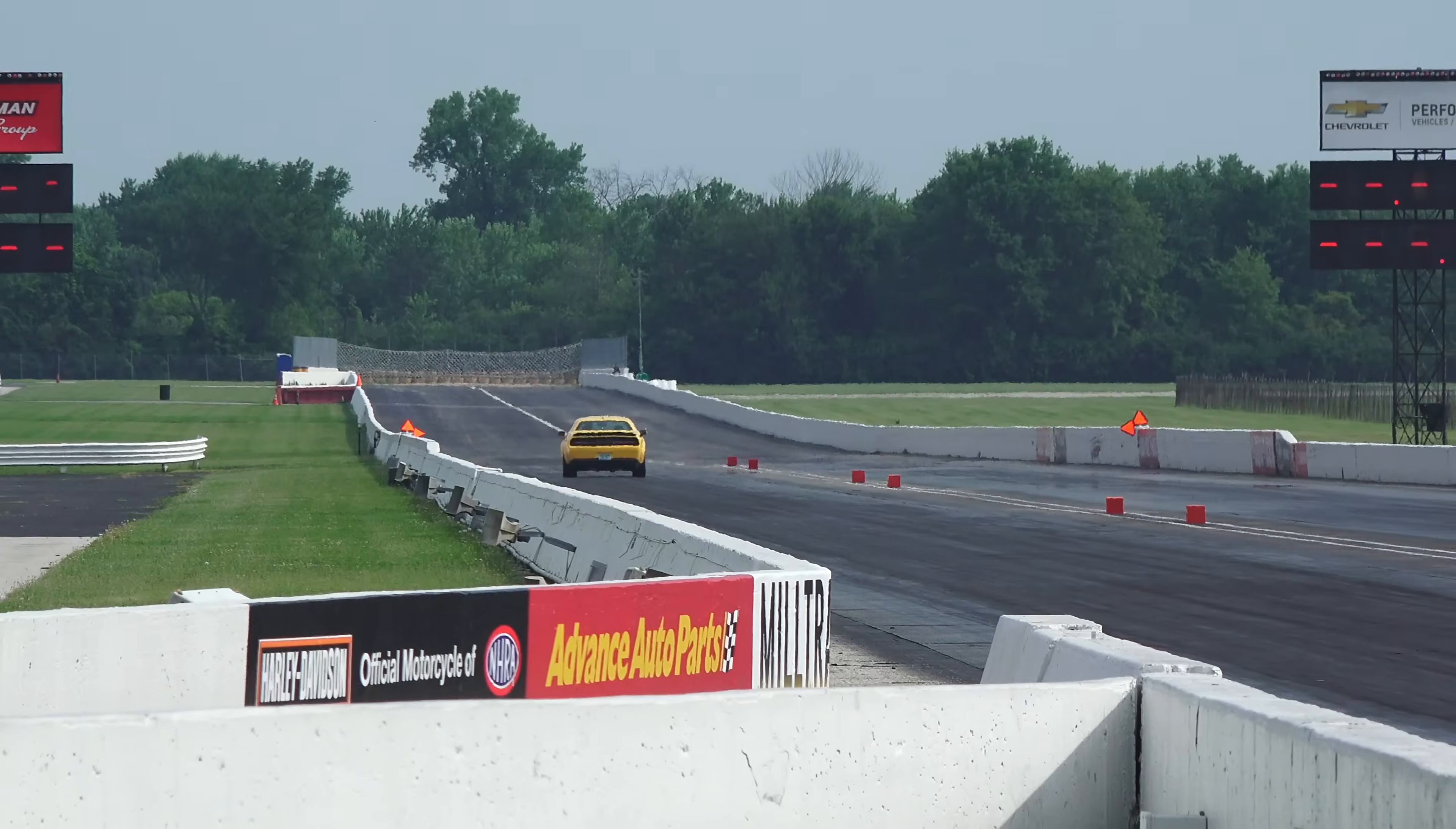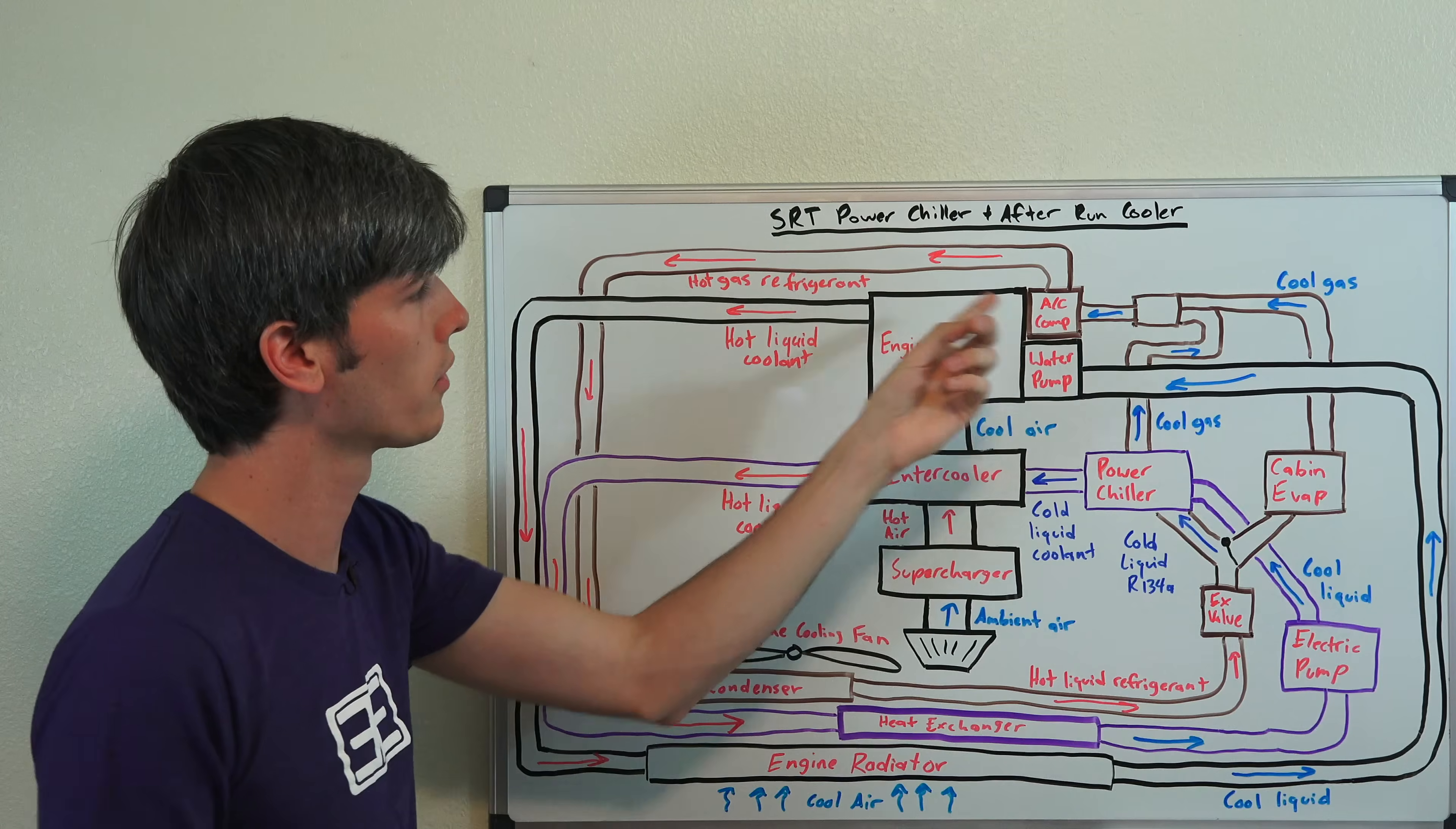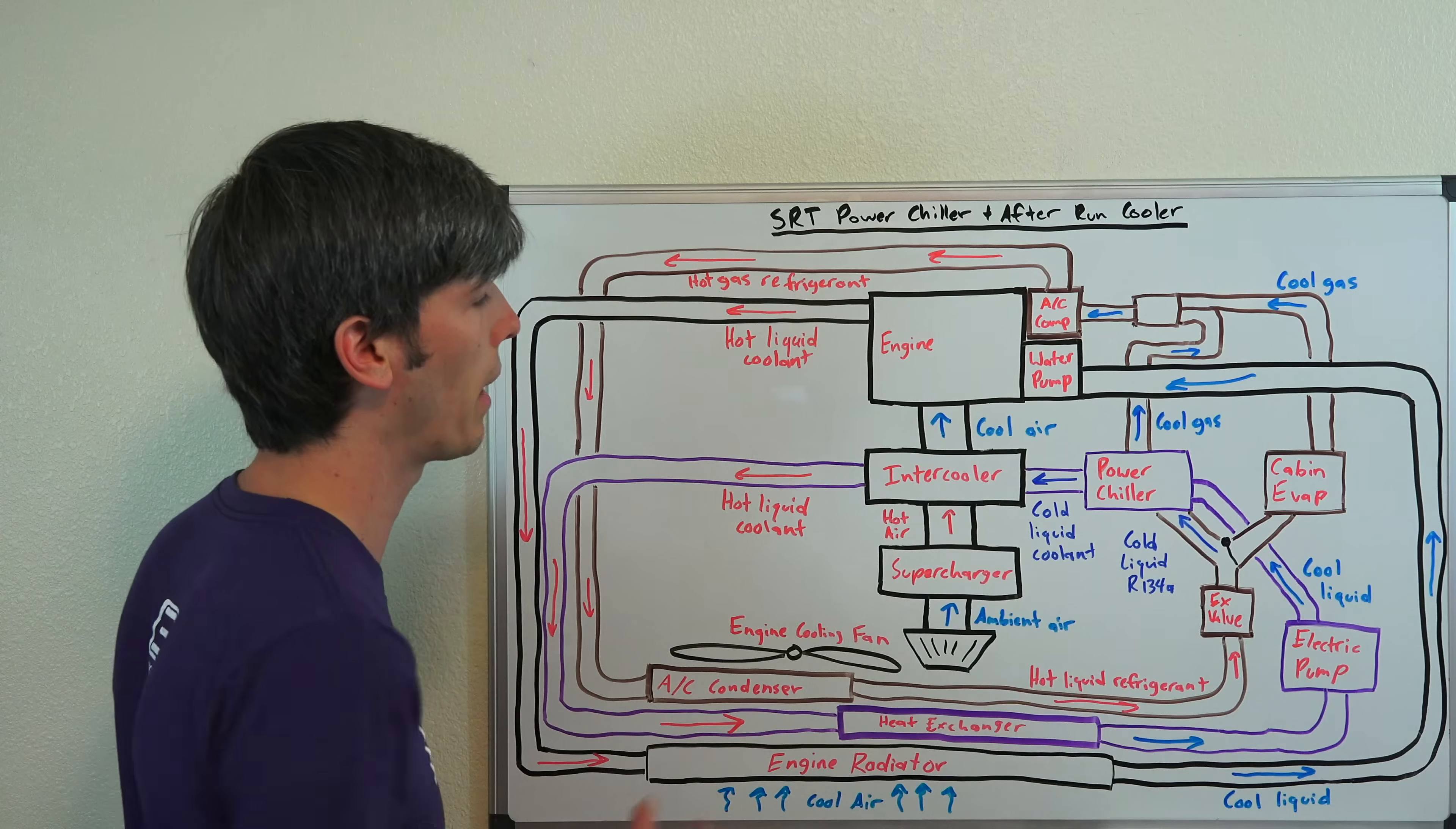This AC compressor has a clutch connected to the engine. And so as long as the engine RPM is under 4500 RPM, you will in fact be running this circuit, this AC circuit, and cooling that liquid coolant that's traveling through the intercooler using the power chiller.